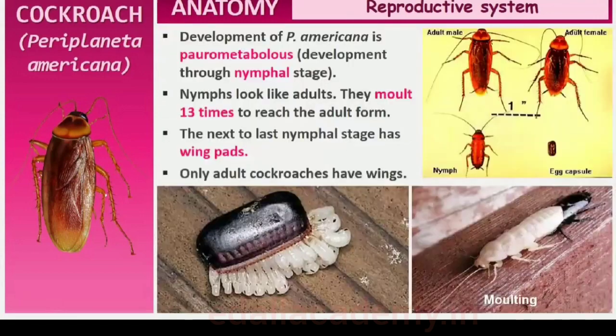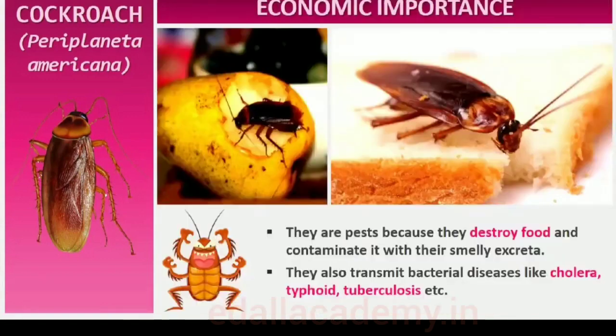The development of P. americana is paurometabolous, meaning there is development through a nymphal stage. The nymphs look very much like adults. The nymph grows by molting about 13 times to reach the adult form. The next to last nymphal stage has wing pads but only adult cockroaches have wings. Many species of cockroaches are wild and of no economic importance, but a few species thrive in and around human habitat, destroying and contaminating food with their smelly excreta. They can transmit a variety of bacterial diseases by contaminating food material.